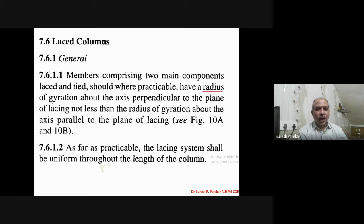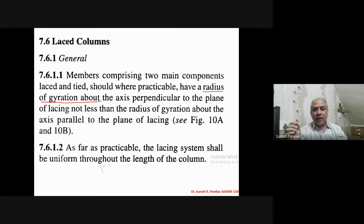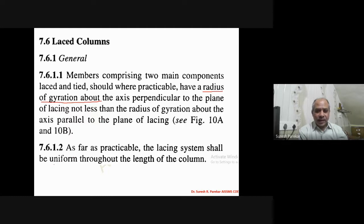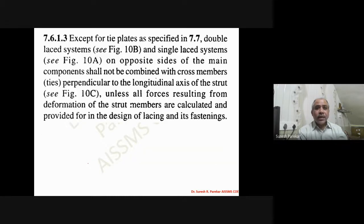The radius of gyration about the axis perpendicular to the plane of lacing should not be less than the radius of gyration about the axis parallel to the plane of lacing — that is, r_yy should not be less than r_zz. We are going to provide a uniform lacing system throughout the length of the column. We will not use single lacing on one side and double lacing on the other, nor combine lacing with cross members.